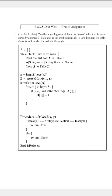In the pseudocode, in the first line we initialize an empty dictionary to the variable A. While table 1 has more rows, we read the first row X in table 1. We assign a key that is the sequence number, and to it we assign a value which is a list containing two elements: the city or town from which the student of that particular sequence number is from, and the gender of that student. Then we move X to table number 2.